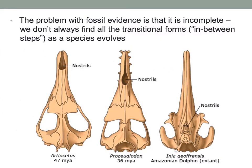The problem with fossil evidence is that we don't always find fossils. The remains have to be deposited in an area conducive for preservation. If an organism dies in an area that doesn't allow remains to be preserved, those remains are lost in the fossil record. For example, looking at a dolphin fossil sequence from 47 million years ago, there are gaps between specimens — things missing in between steps as the species evolved.